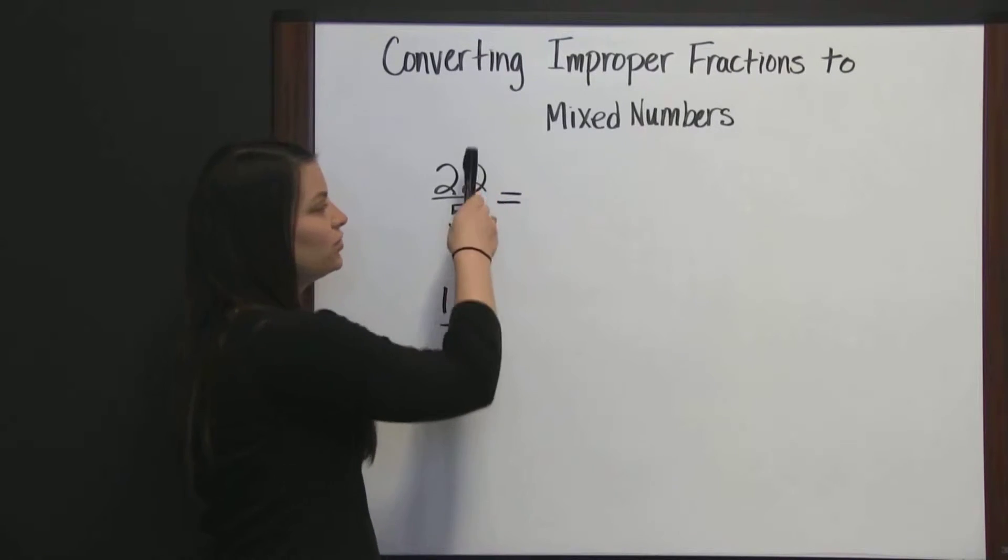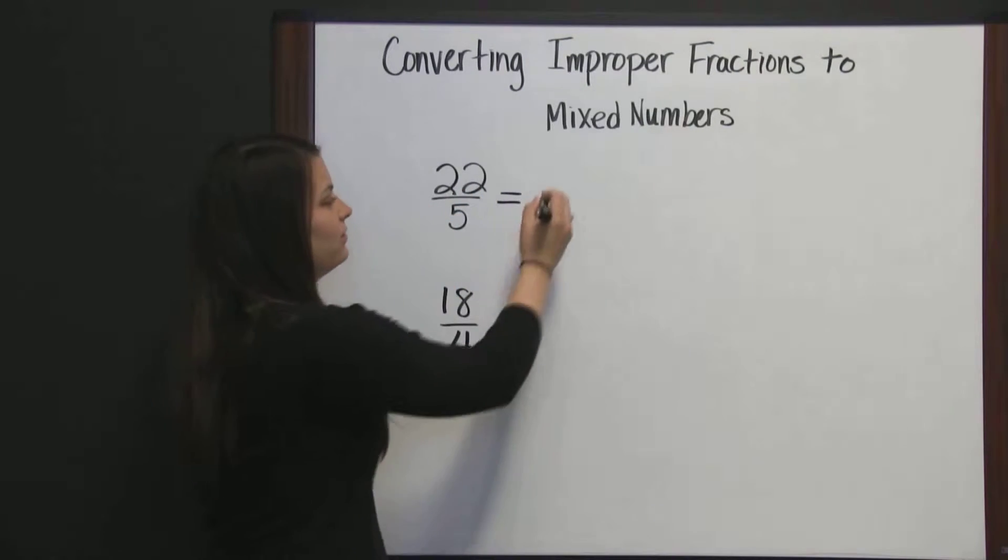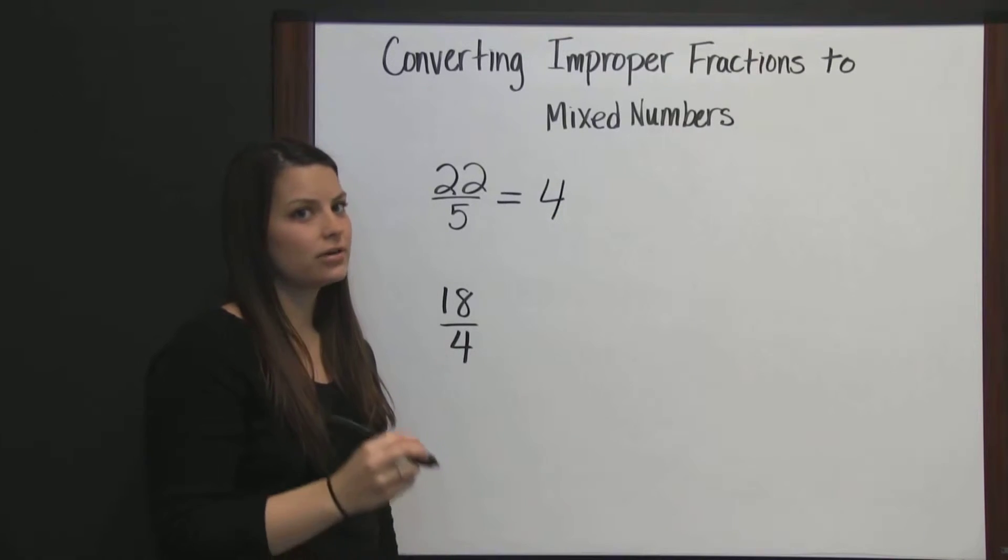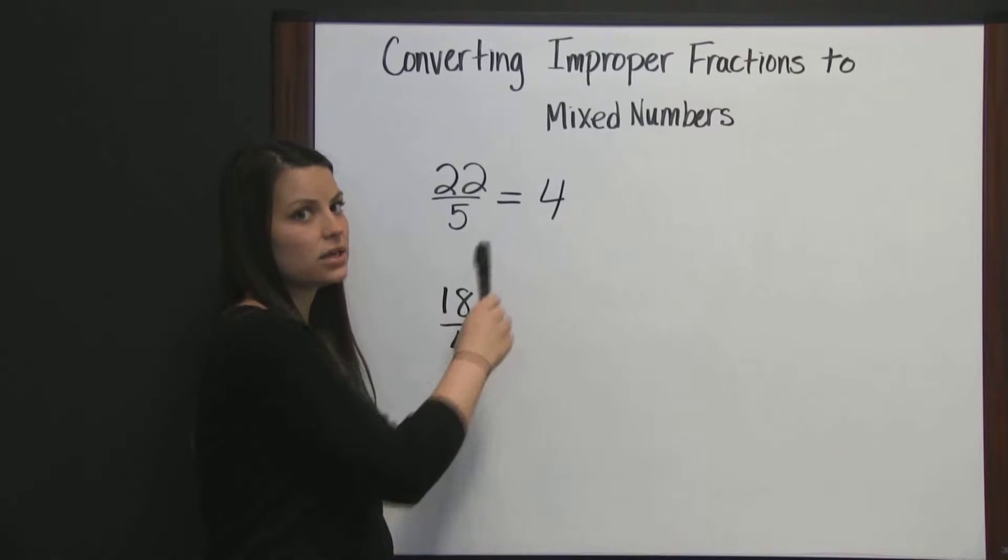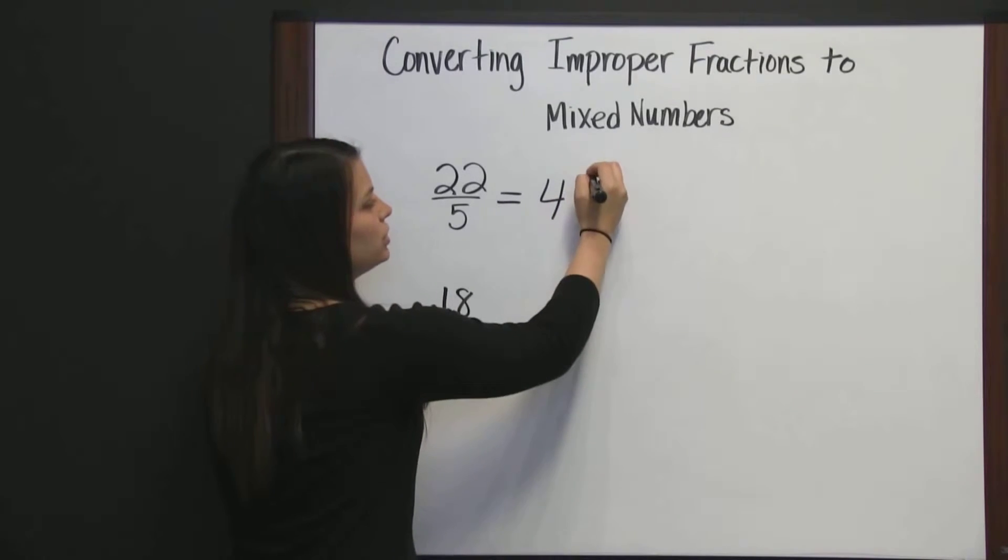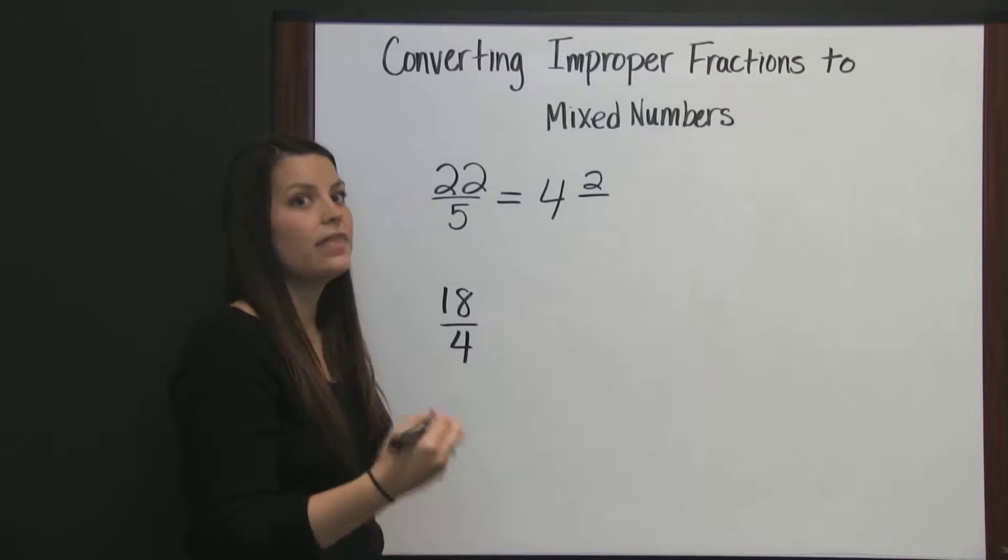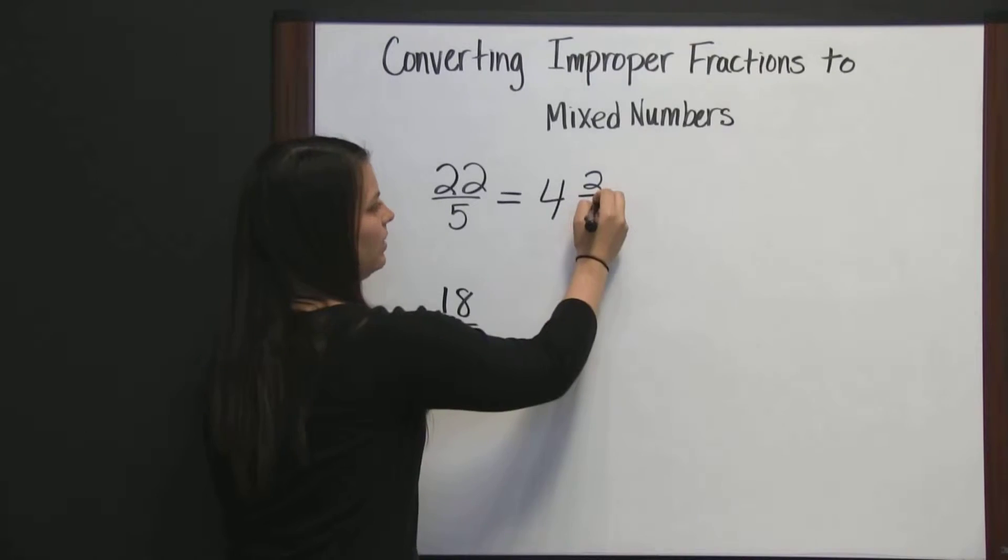Twenty-two divided by five is four, with a remainder of two. Four is our whole number, while two is the numerator of our fraction, and the denominator stays the same.